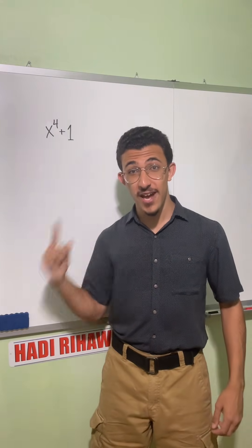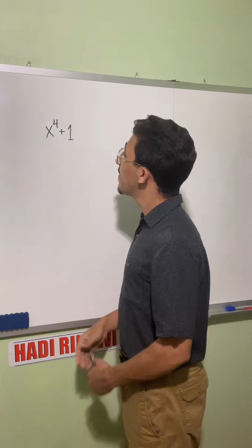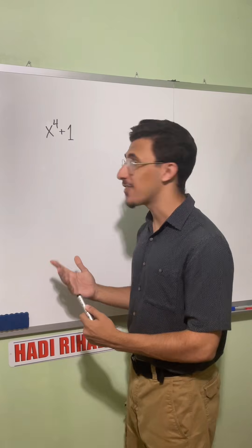Here are three different ways to factor x to the fourth plus one over the reals. The first method we'll use is matching coefficients.